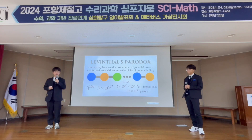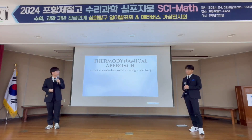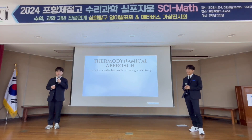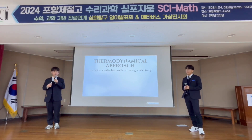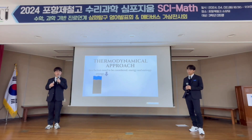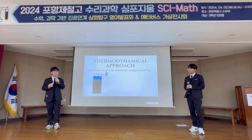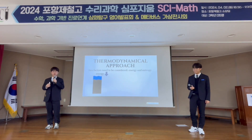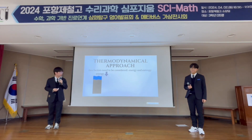So what answer can we come up with for this paradox? The answer can be found in terms of thermodynamics. In order to understand how chemical equilibrium works, two factors need to be considered: energy and entropy. Energy is one of the important factors that determine which chemical changes occur spontaneously. Just as water flows from high to low, natural chemical reactions occur spontaneously from high energy to low energy.